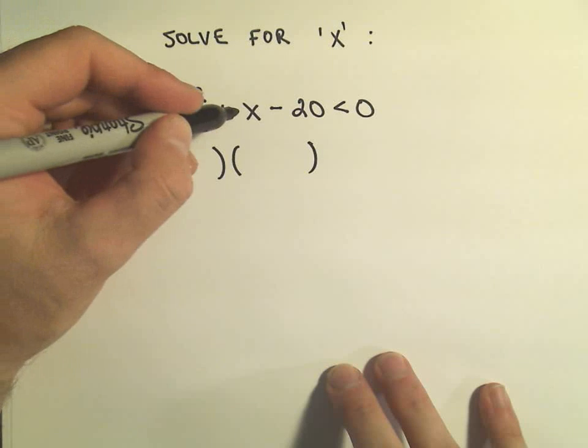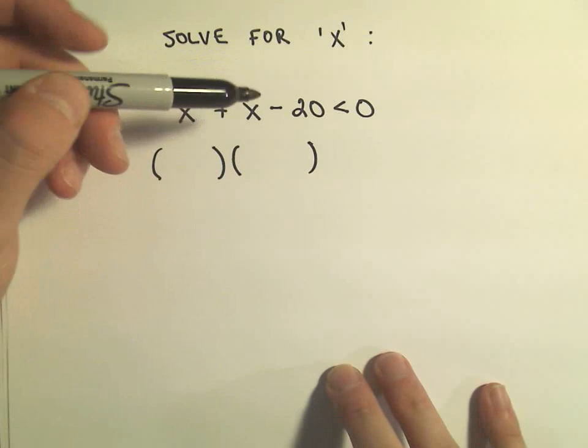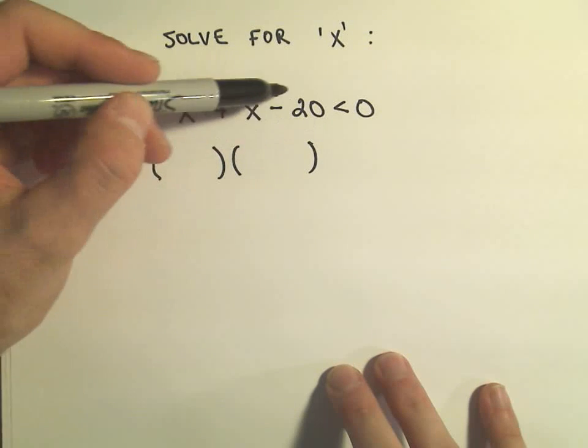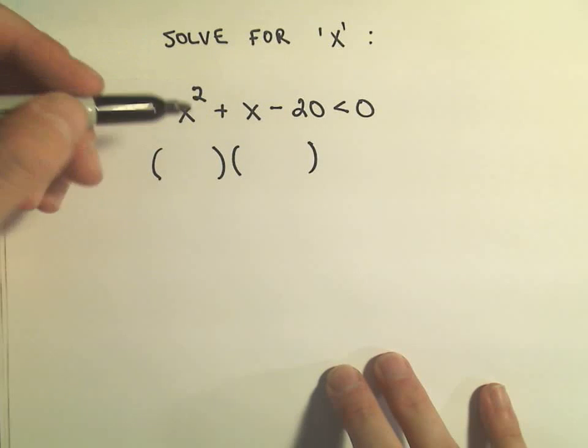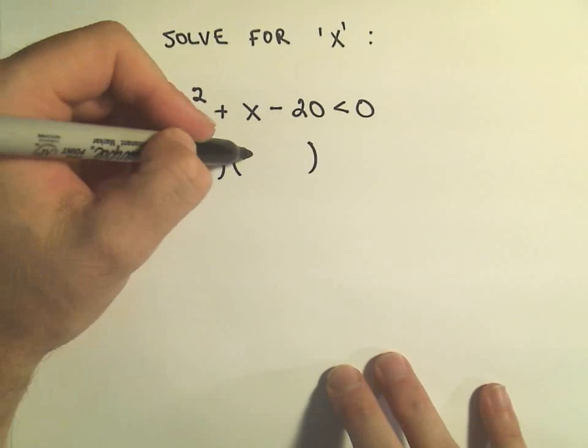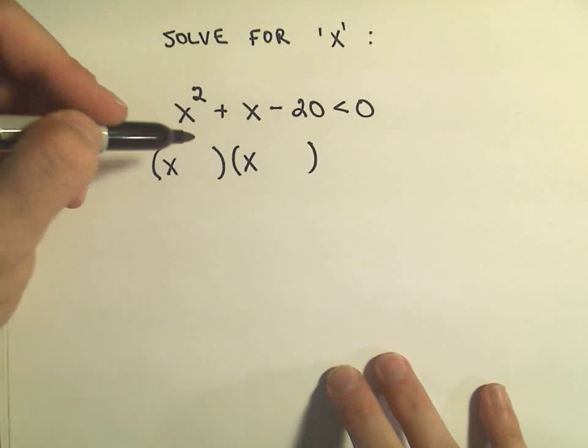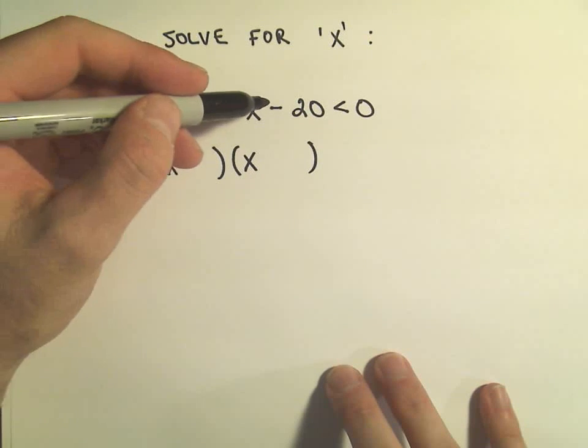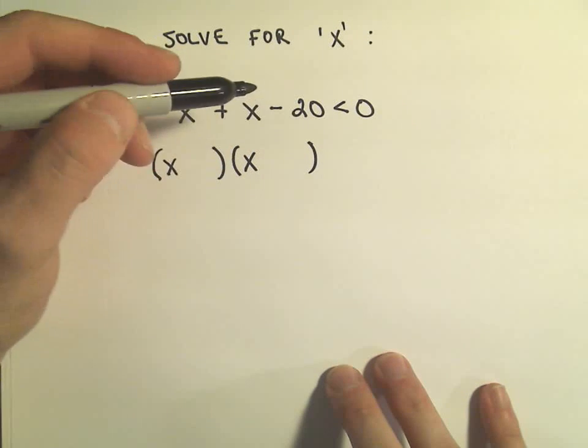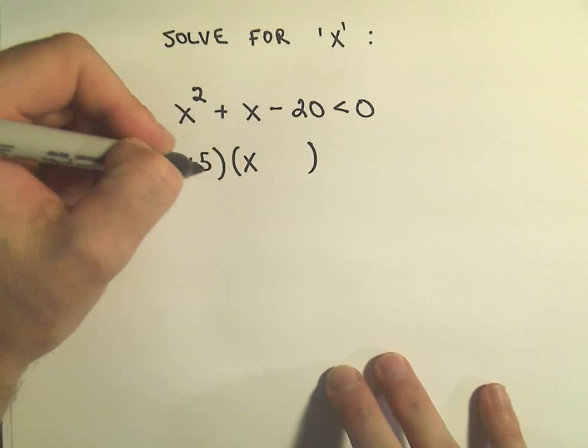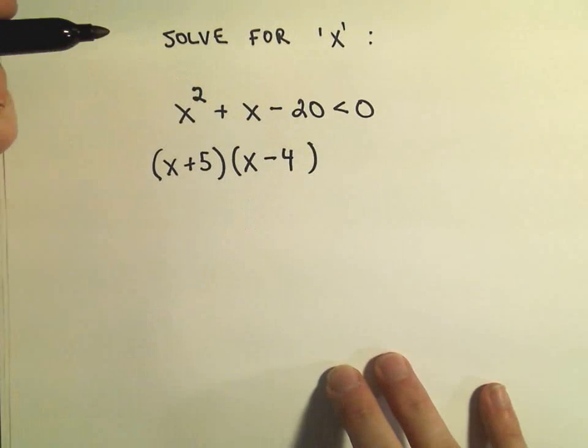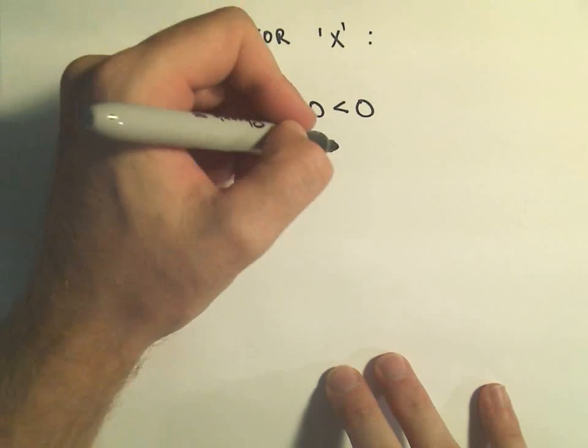Okay, so if we factor x squared plus x minus 20, again, I'm looking for two numbers that multiply to negative 20, but add up to positive 1. Well, to get the x squared, we'll need an x and an x. I think if we use 5 and 4, that'll give us a 20. I think if we use positive 5 and negative 4, that'll give us our correct factorization.